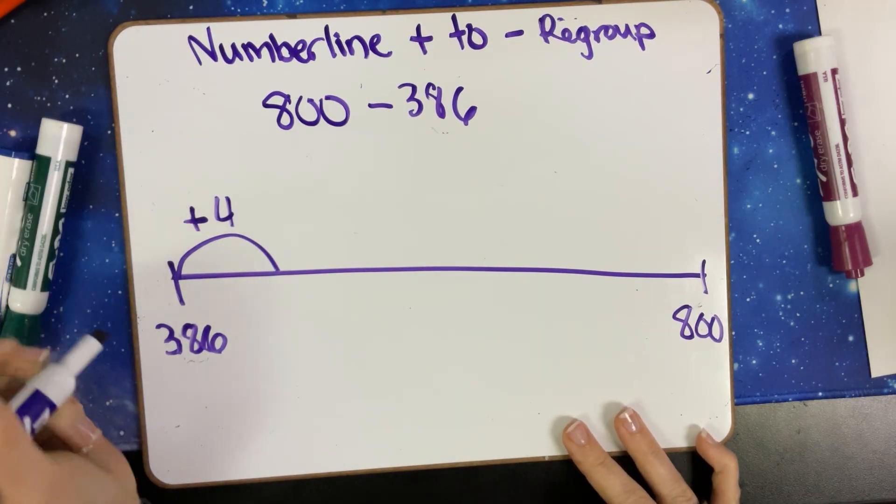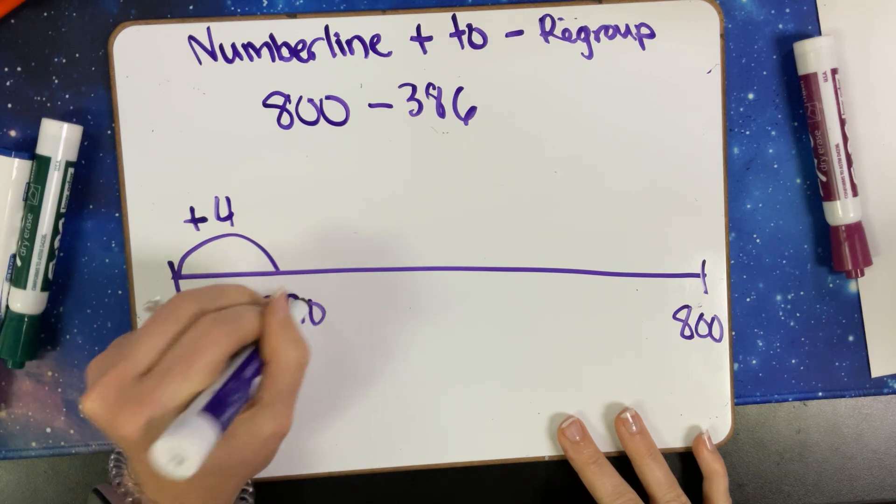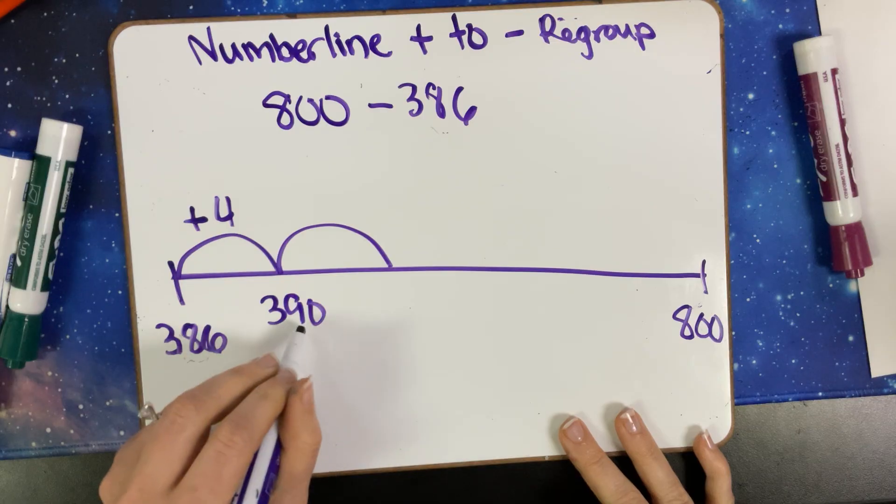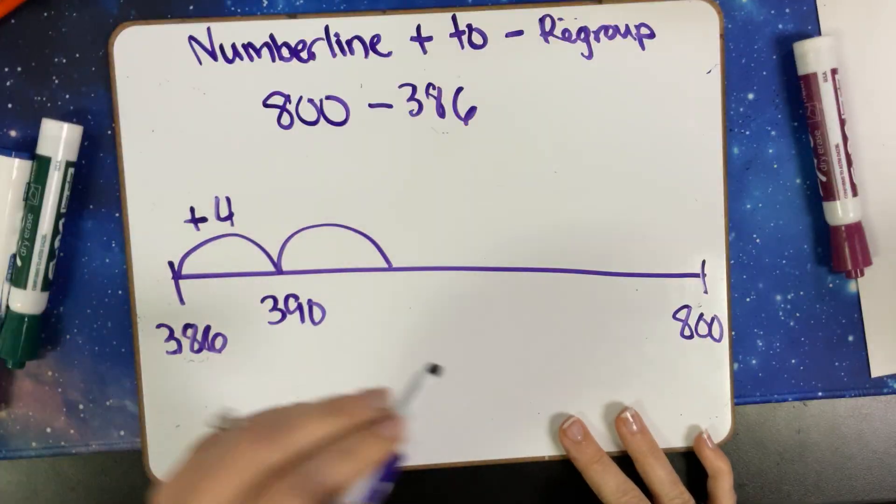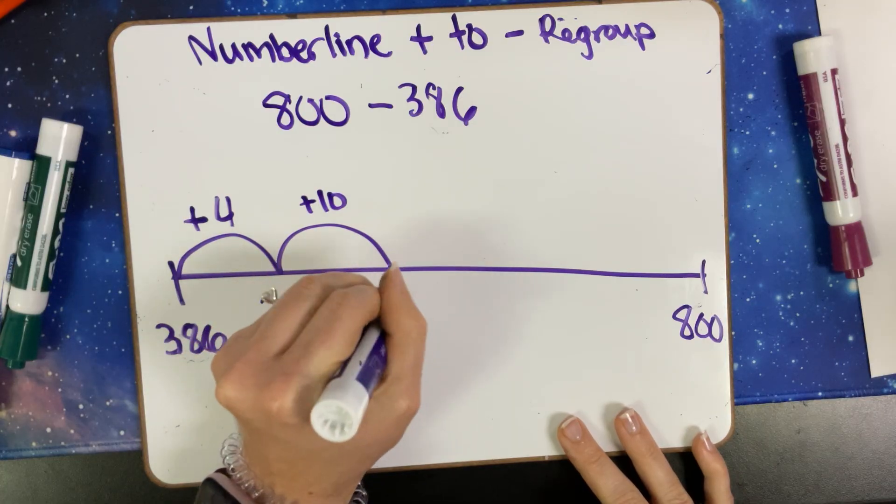We're going to add four because I know six plus four equals ten. So now we have 390. Next, I need to get this 90 to my next hundred. So I'm going to add 10 because 90 plus 10 is 100, and then I will have 400.